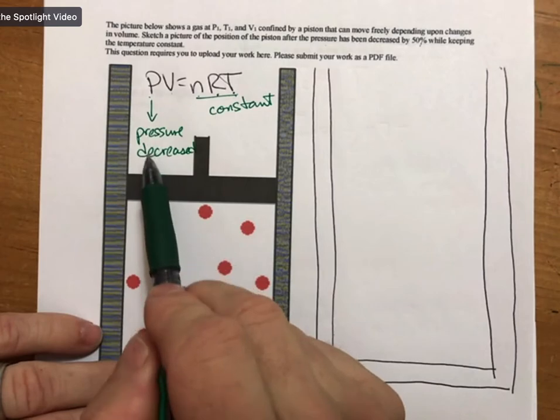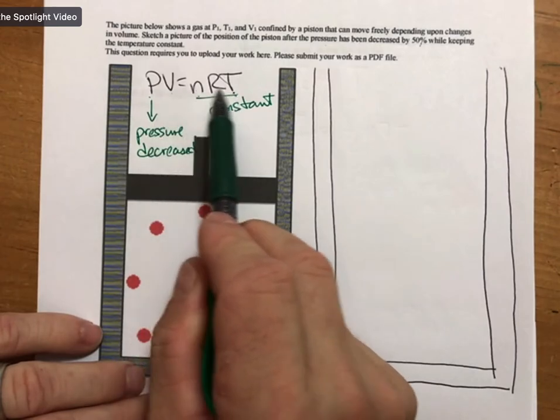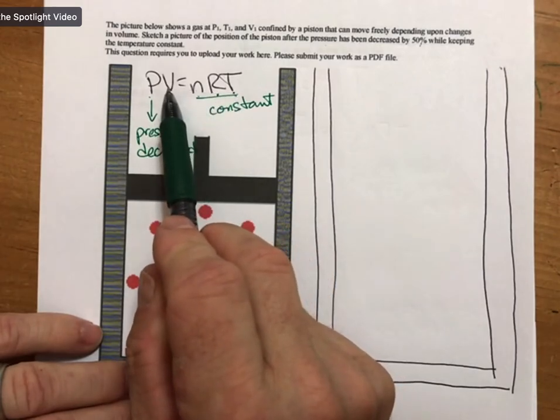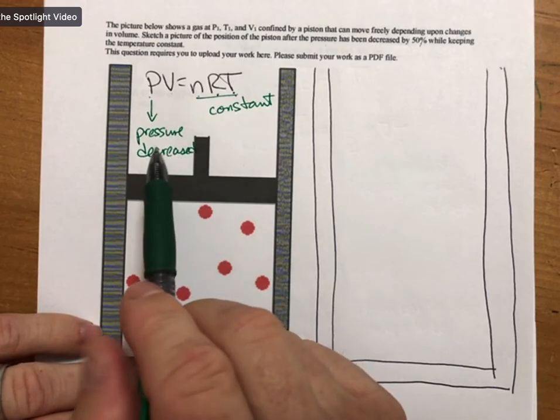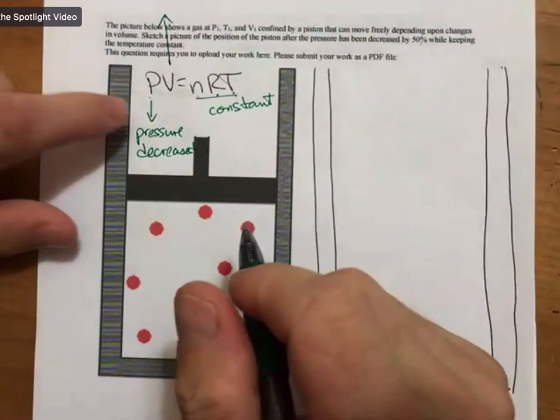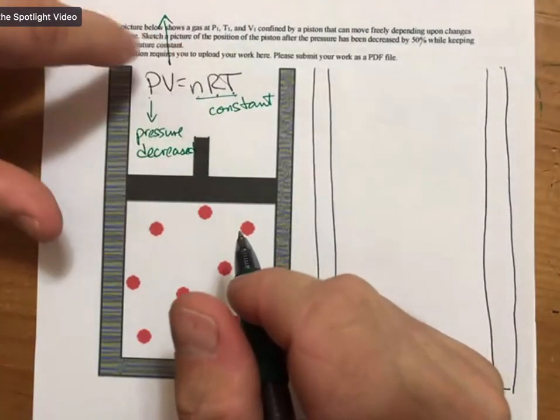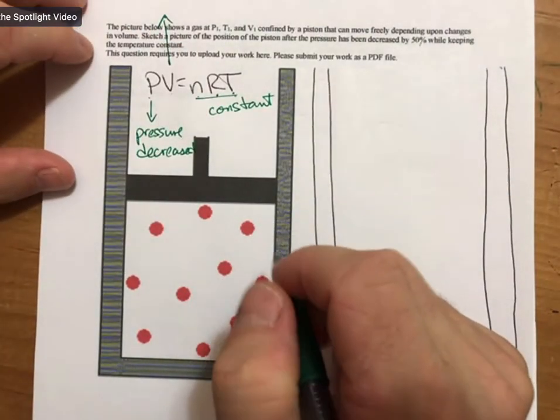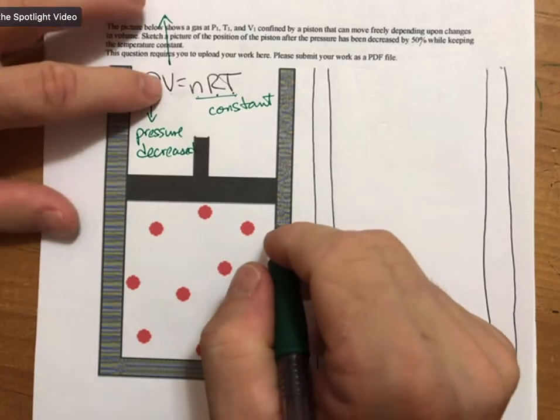Which means that if pressure decreases to keep this a true statement, volume must increase. So pressure decreased to keep this a true, or to keep it equal, volume must increase.